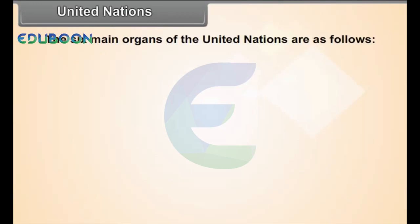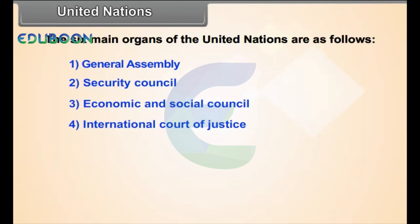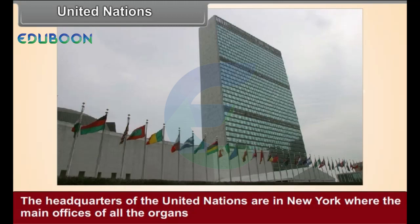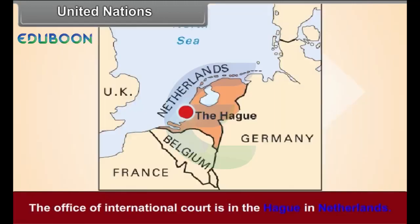The six main organs of the United Nations are as follows. The headquarters of the United Nations are in New York, where the main offices of all the organs except the International Court of Justice are also located. The office of the International Court is in The Hague in the Netherlands.